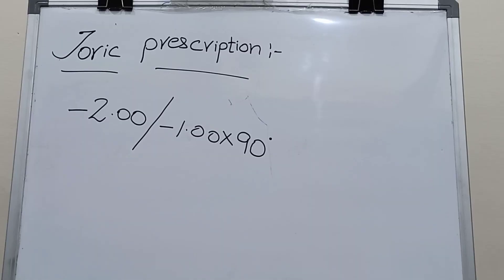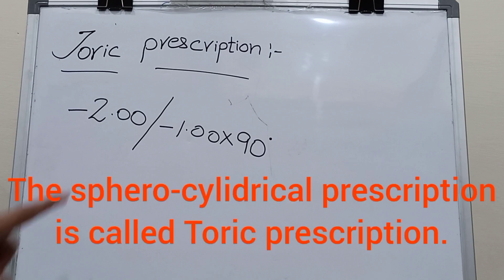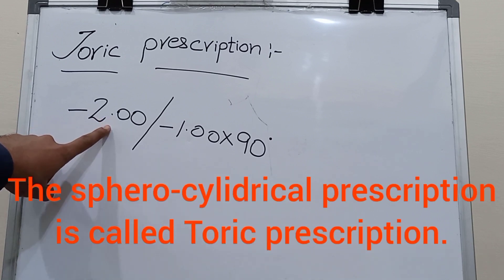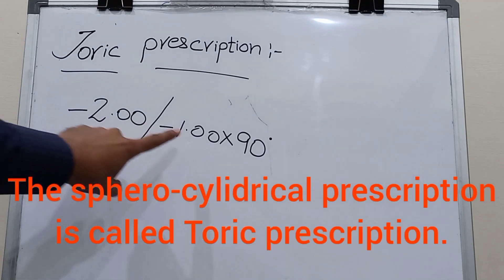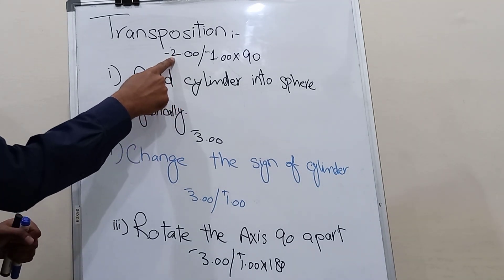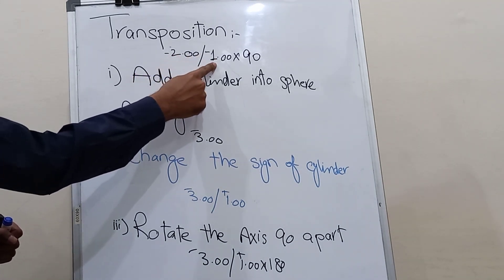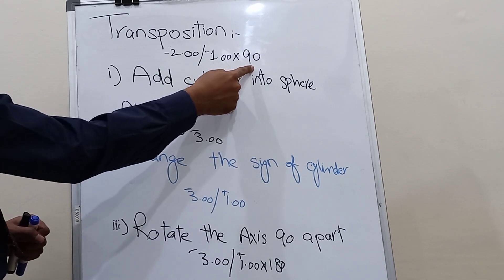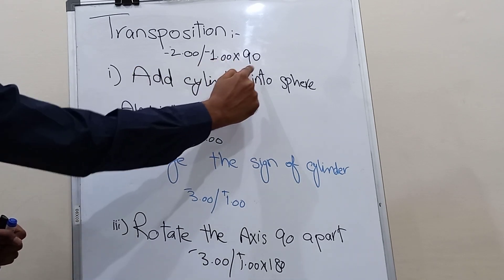Before discussing transposition, we have to learn about the toric prescription. The toric prescription is the prescription which has spherical correction and cylindrical correction simultaneously. A toric prescription has a sphere, a cylinder, and an axis of the cylinder.